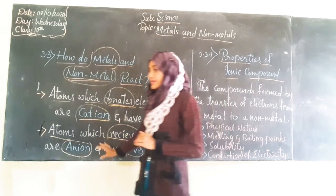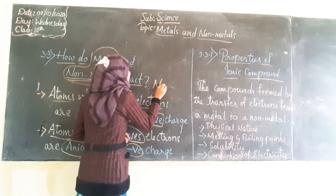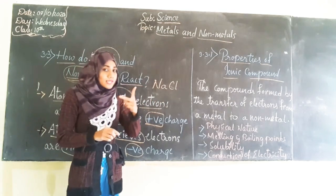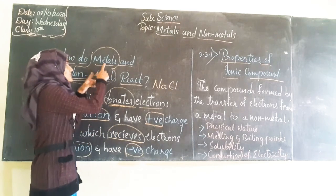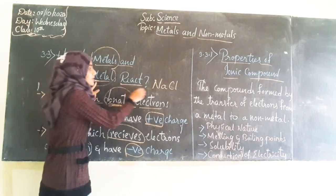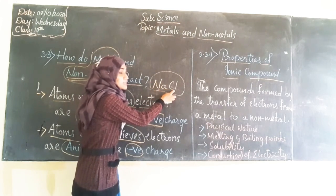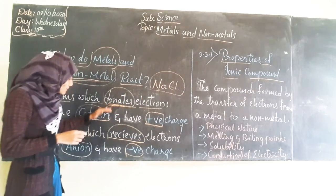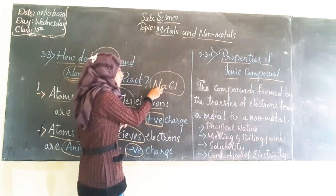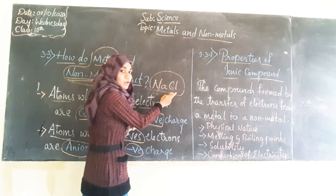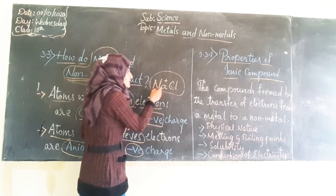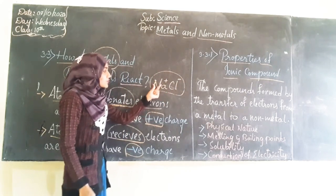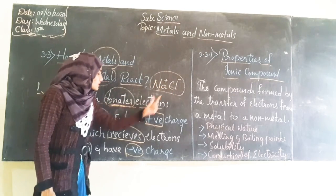The best example to understand this is sodium chloride, NaCl. Here sodium is a metal and chlorine is a non-metal. Sodium will donate one electron to chlorine; hence it will gain a positive charge. Whereas chlorine will receive one electron from sodium, hence it will get a negative charge. So here we can take sodium as the cation and chlorine as the anion.